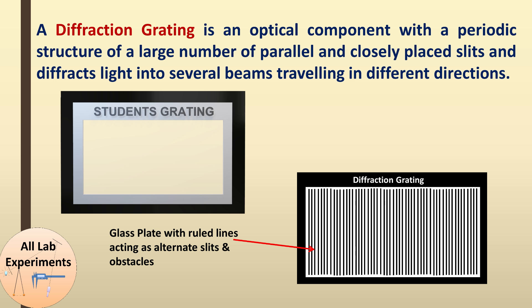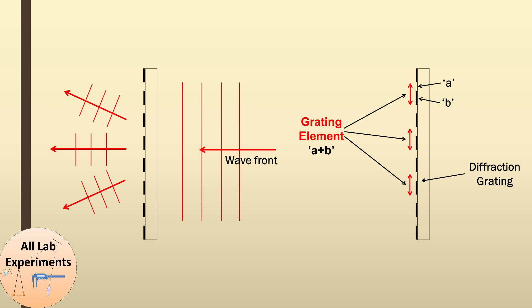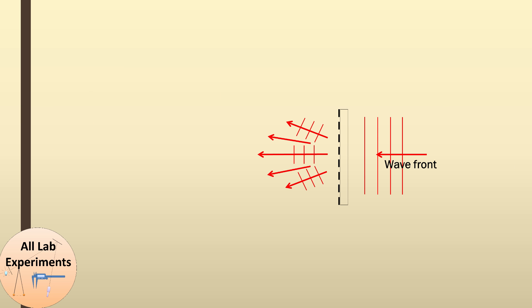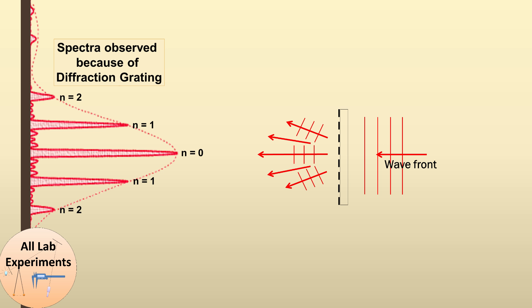From the naked eye it looks like clear glass. The most important thing to know about this grating is its grating element, which is the distance between two consecutive slits or two consecutive obstacles. The width of one slit plus one obstacle (a + b) is the grating element. When light passes through the grating and travels in different directions, we observe a pattern with a 0th order maxima at center, then first order, then second order maxima.